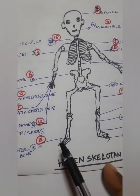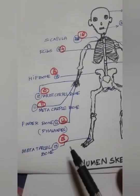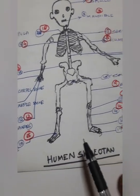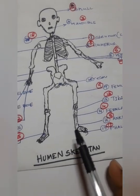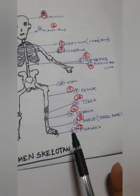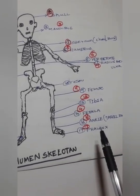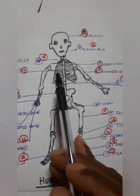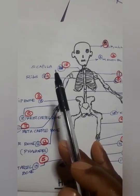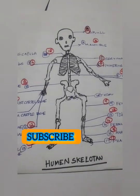Number 15: metatarsal bone — below the ankle. Number 16: ankle — tarsal bone. Number 17: phalanges. Number 18: scapula — it is the back side of the shoulder.